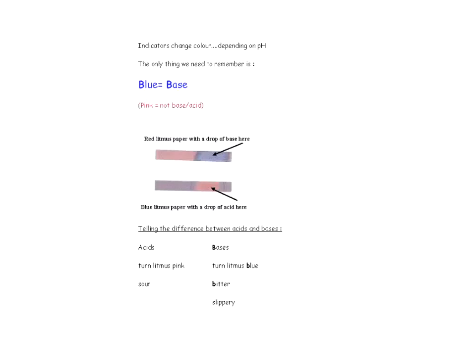Indicators are substances that change color depending on the pH of the substance they're placed in. The important thing to remember is that blue equals base — it doesn't matter if you have red or blue litmus paper. If you get a result that's blue, you have a base, and that's easy to remember because base and blue both start with B. If you have pink, you have an acid. The diagram shows red litmus with base dropped on it turning blue, and blue litmus with acid turning pink.